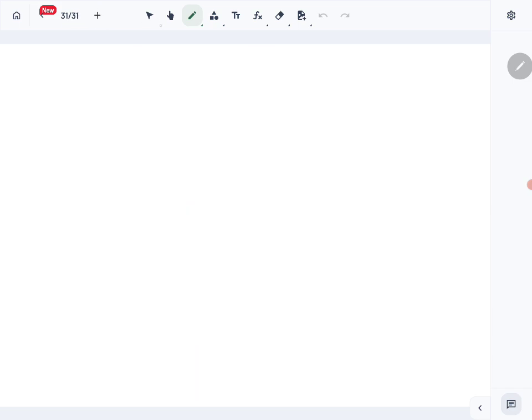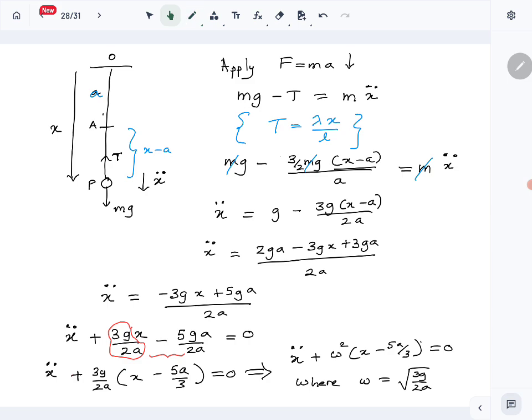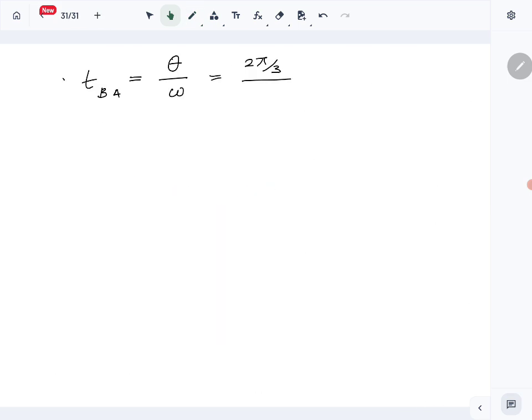So once we have that we can use the formula. We know that time from B to A is given by this formula: theta divided by omega. Theta is what? Theta is 2π over 3. Omega, the angular speed, is root 3g over 2a. So that becomes 2π over 3 times root 2a over 3g, which is also equal to t₂ that we want to find: 2π over 3 root 2a over 3g. So then total time taken by P to go from B to O is t₁ plus t₂.